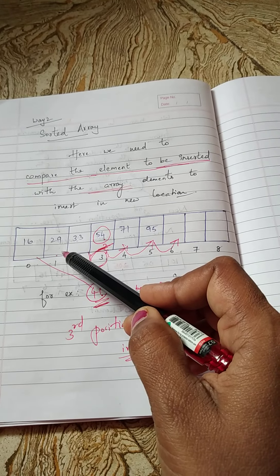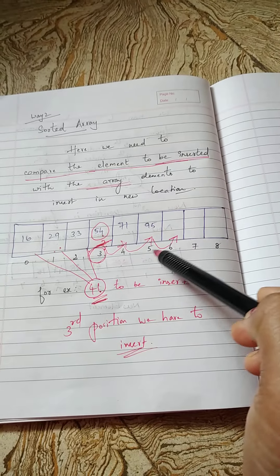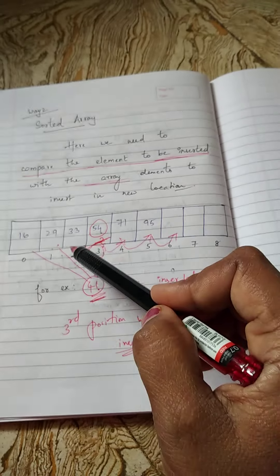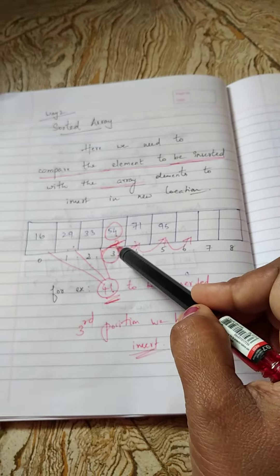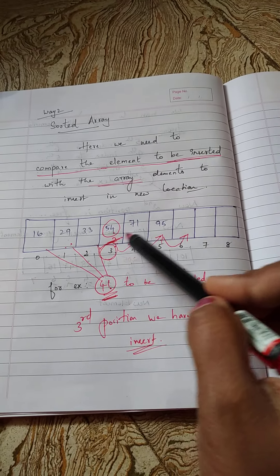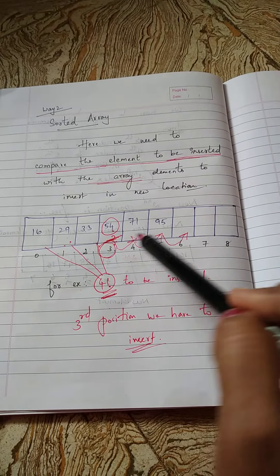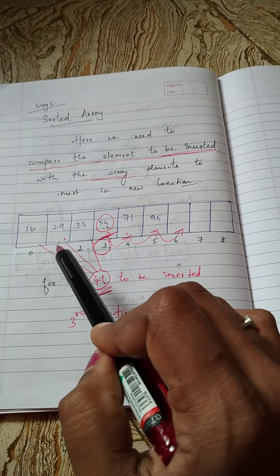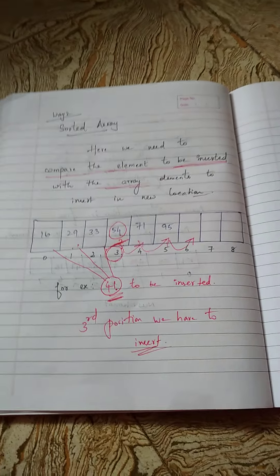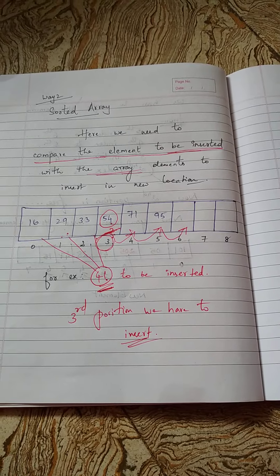In insertion we do shifting forward. Now for deletion, you have to shift elements backward. So second should come to first position, third should come to second position, fourth should come to third position. In this way, you have to shift back to the emptied position. So that is all for insertion and deletion in an array. Thank you.